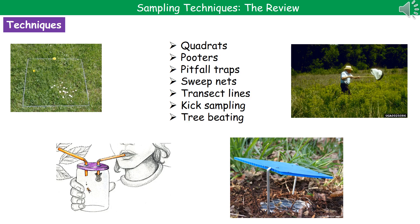Next is kick sampling, which is where we look at riverbanks or riverbeds. As the name suggests, you basically kick the edge or the bottom of the stream and hold a net downstream — any organisms you've stirred up by kicking get caught in the net. Finally, tree beating: you get a big white cloth underneath a tree, then shake or hit the tree to dislodge any invertebrates. They fall onto the white cloth and you can collect them using a pooter, or just count them if there aren't that many.